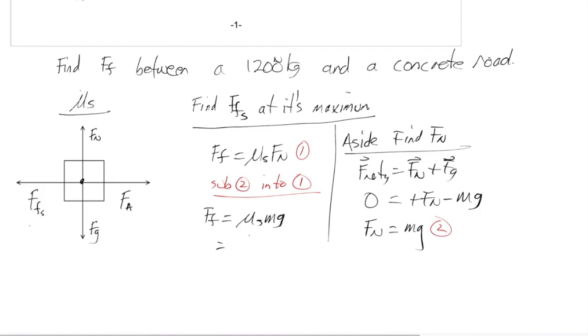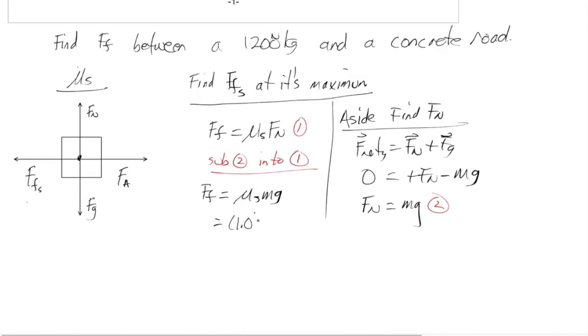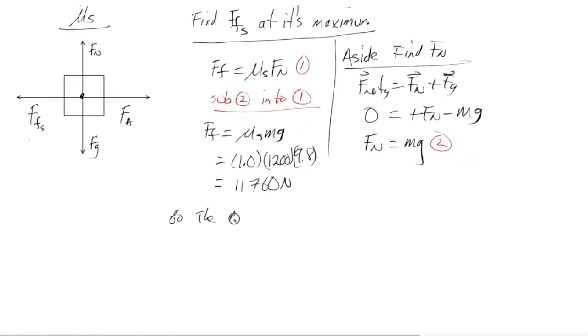So we need to find this value from mu S. So when we look at the table, rubber on concrete, 1.0 is the static, 0.8 is the kinetic. 1.0 times 1,200 times 9.8. And that works out to 11,760 newtons. Therefore, the maximum static force of friction is equal to 11,760 newtons. Now, that's a maximum. So let's give a couple of scenarios.